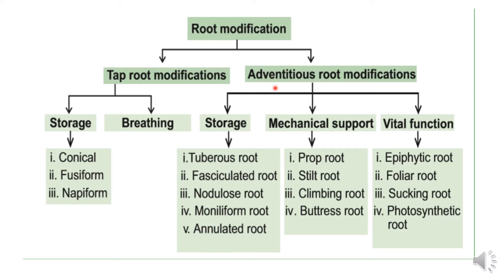What is Adventitious Root? When roots develop from any part of the plant other than the radicle, they are called Adventitious Roots. There are many types: Storage Roots, Mechanical Support, and Vital Function roots.